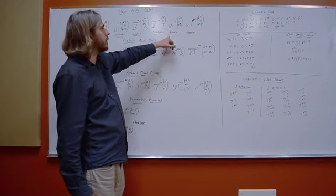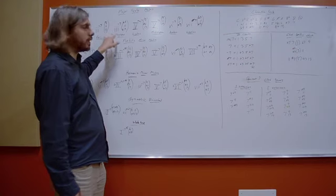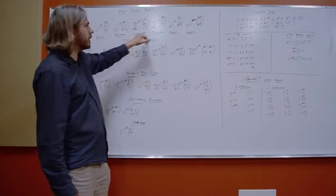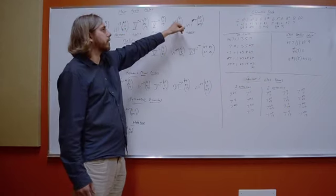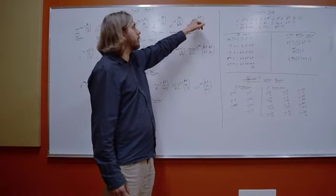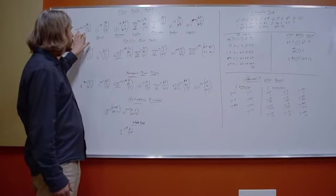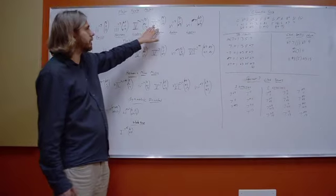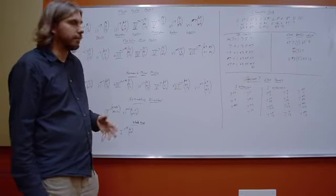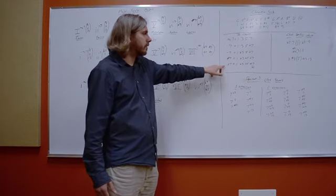Next we have another minor 7 sound, the Aeolian mode — natural 9, 11, and flat 13. This is kind of a compromise between Phrygian and Dorian. Dorian had natural 9, 11, and 13; Phrygian had flat 9, 11, and flat 13; and Aeolian has the natural 9, 11, and just the flat 13. Finally we have the Locrian sound — a half diminished 7th chord with flat 9, 11, and flat 13. So we have major 7 sounds, minor 7 sounds, a dominant 7 sound, and a half diminished sound — four of our five primary 7th chords. The fifth is the fully diminished.